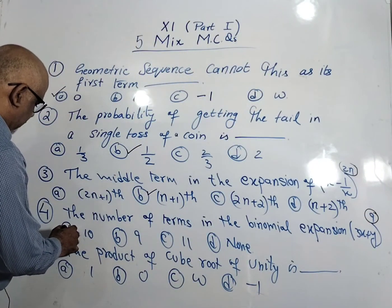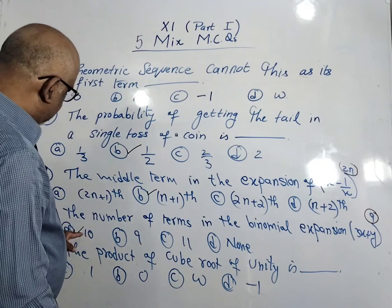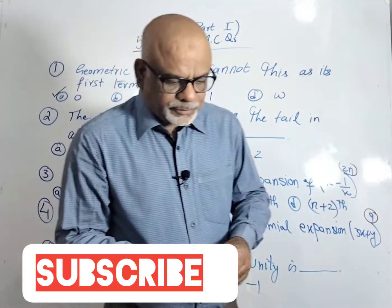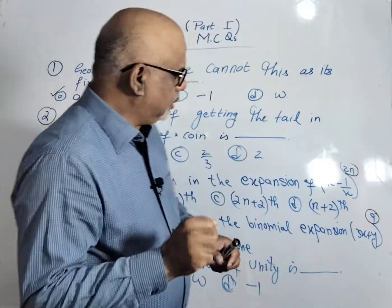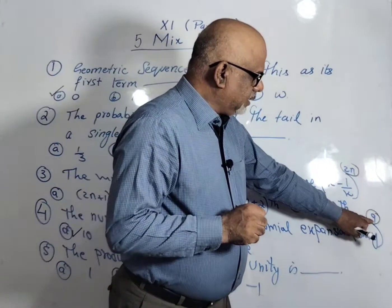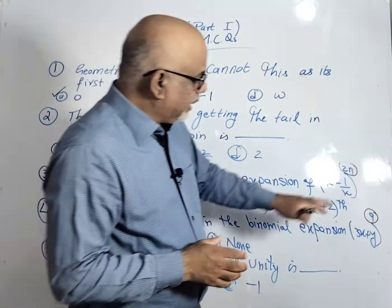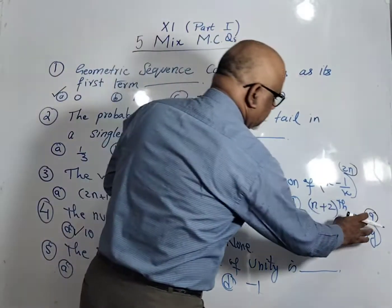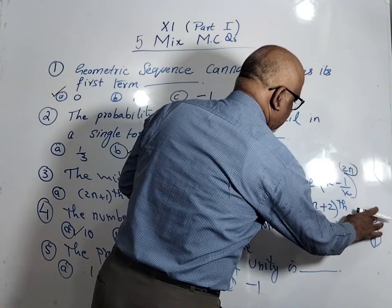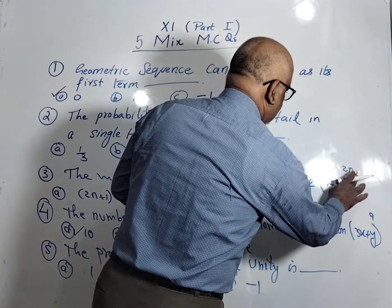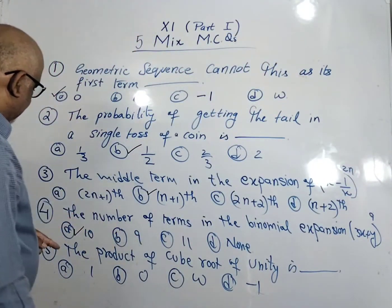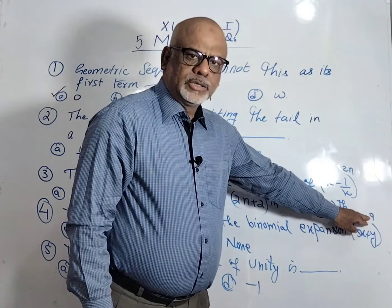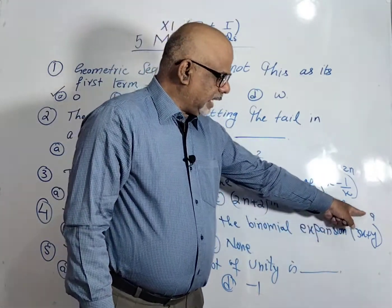There will be 10 terms in this expansion. In binomial expansion, the total number of terms are n plus 1. So here if it is n, that means we have total number of terms are 10. If it is 100, that means 101 terms total will be the total terms in this expansion. So here the correct option is 10 because here the power n is 9. So the total number of terms is n plus 1. So that means 9 plus 1 is 10.